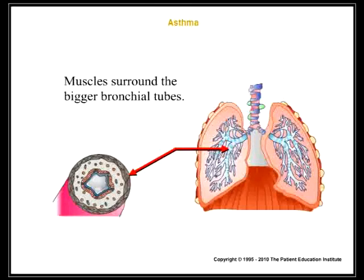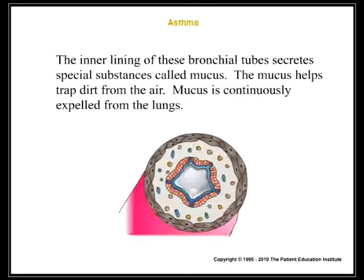Muscles surround the bigger bronchial tubes. The inner lining of these bronchial tubes secretes special substances called mucus. The mucus helps trap dirt from the air. Mucus is continuously expelled from the lungs.